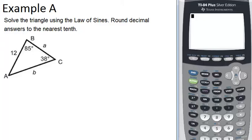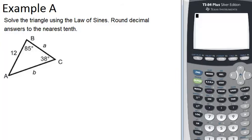In example A, it says solve the triangle using the law of sines. Round decimal answers to the nearest tenth. So in this case, if we're using the law of sines,